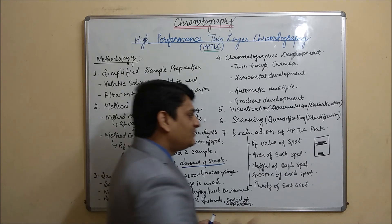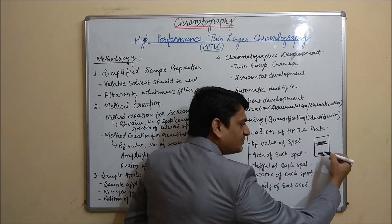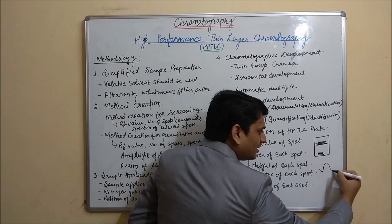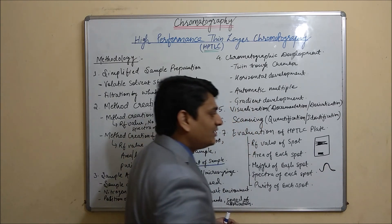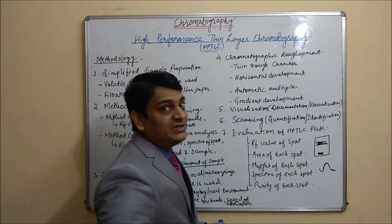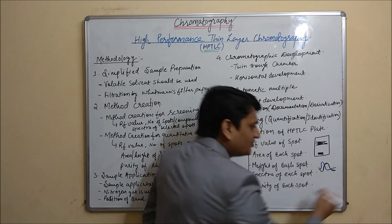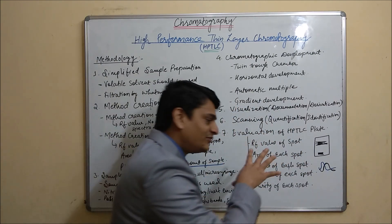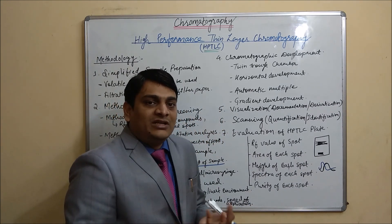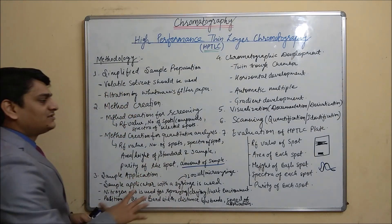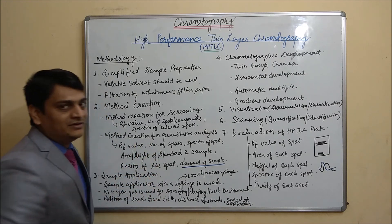However, if two compounds are present in the spot — for example, if the spectra at the start and middle are the same but at the end a different compound is present, the spectra will differ. This allows us to determine the purity of the spot and whether it is properly separated. This is the overview of the methodology used in the HPTLC method.